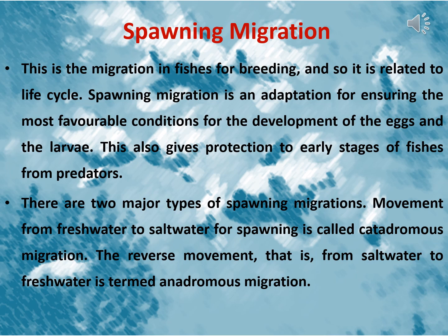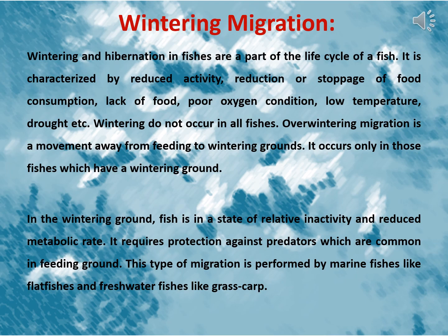Another one is gametic migration or spawning migration. This is the migration in fishes for breeding, and so it is related to the life cycle. Spawning migration is an adaptation for ensuring the most favourable conditions for the development of eggs and larvae. This also gives protection to early stages of fishes from predators. The last one is wintering migration. Wintering and hibernation in fishes are a part of the life cycle of a fish. It is characterised by reduced activity, reduction or stoppage of food consumption, lack of food, poor oxygen condition, low temperature, drought, etc. Wintering does not occur in all fishes. Overwintering migration is a movement away from feeding to wintering grounds, and it occurs only in those fishes which have a wintering ground.